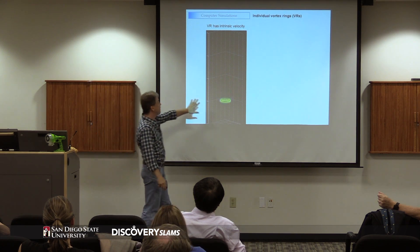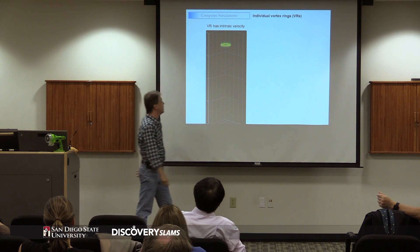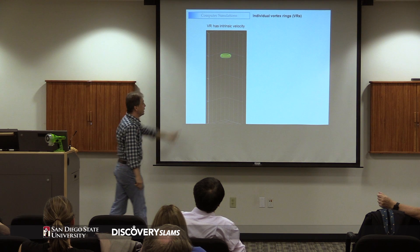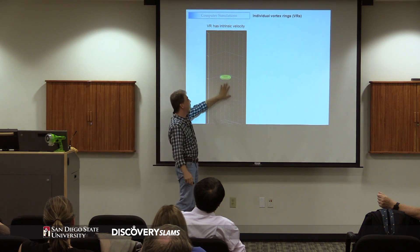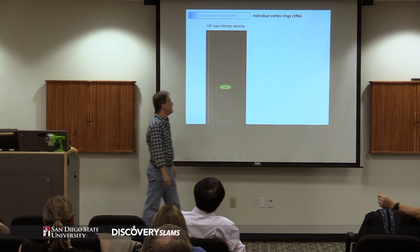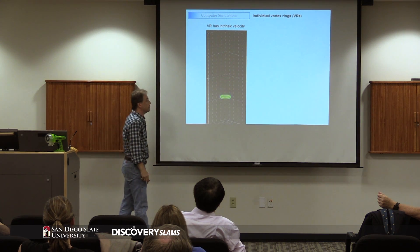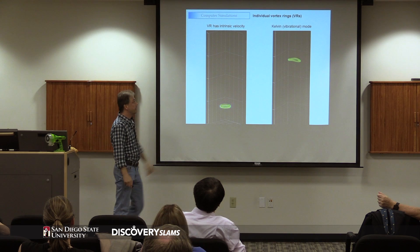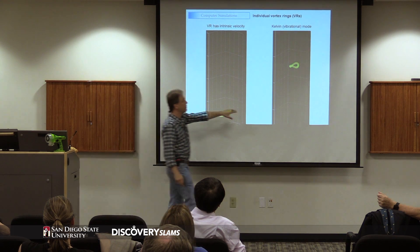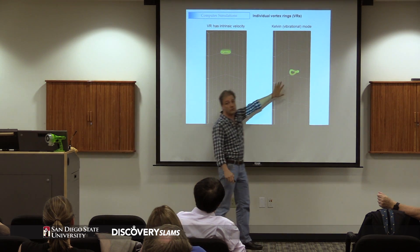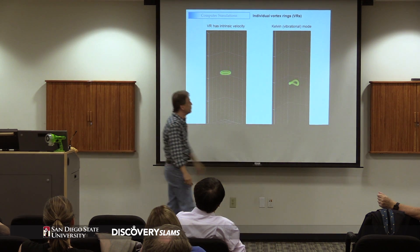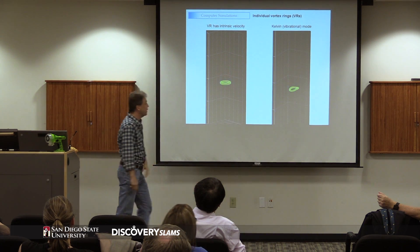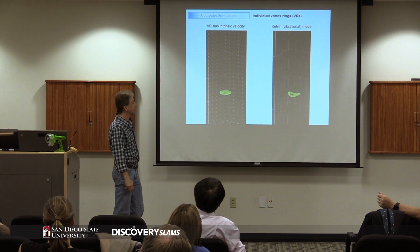And you can see that these rings have very peculiar behavior — they always have an intrinsic velocity. They could also have undulations. You actually saw this in the movies with the dolphins — you can see these undulations.